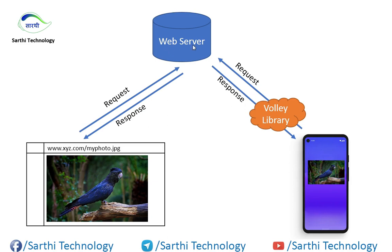You can use the Vali library to send the same request to the server, and when the server responds, you can use the same library to show the image in your mobile application.